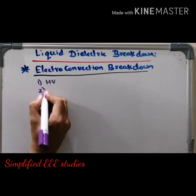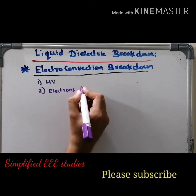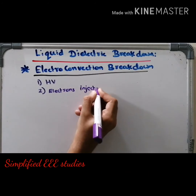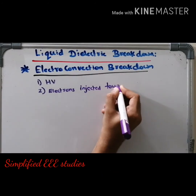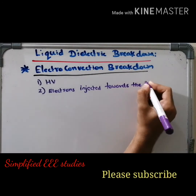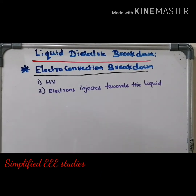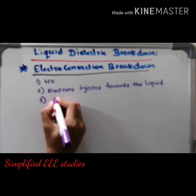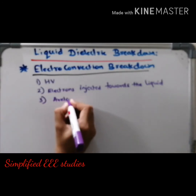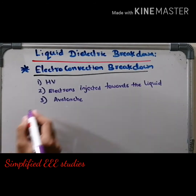Electrons will be injected towards the liquid media. As a result, collision will take place. Avalanche will be forming. Avalanche means a group of electrons — that is known as an avalanche.